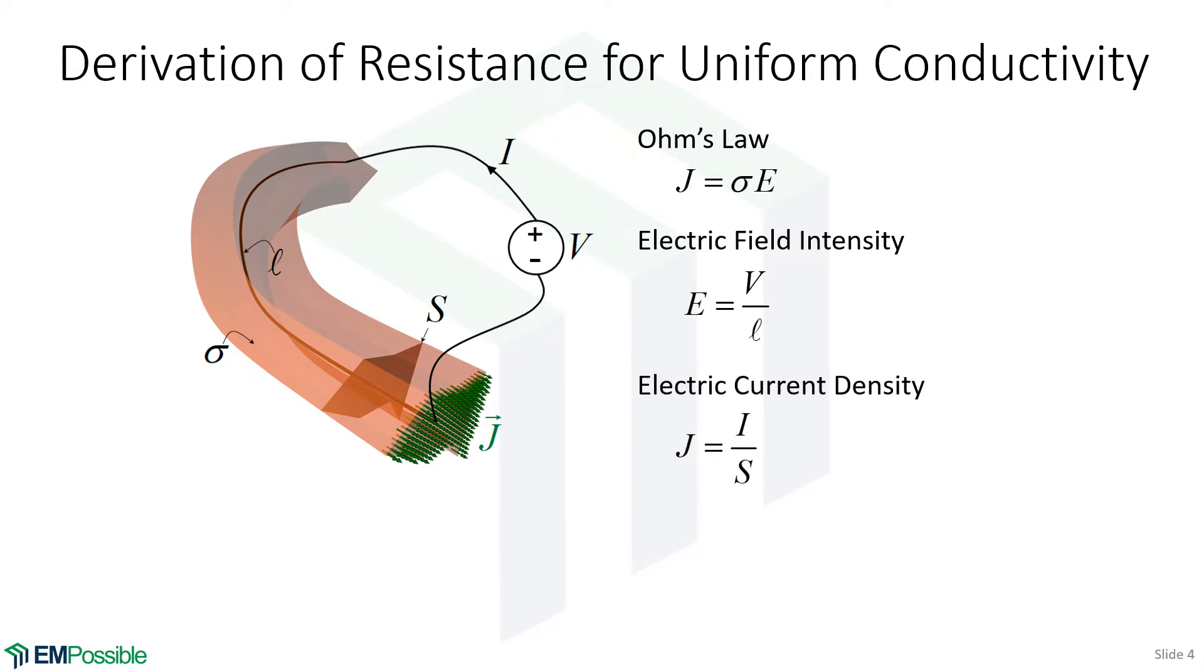So the electric current density is then the total current divided by the surface area. But we also have an expression for the current density up here using Ohm's law. That's sigma times E.